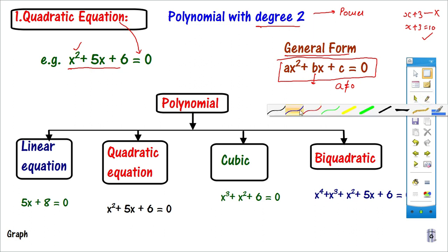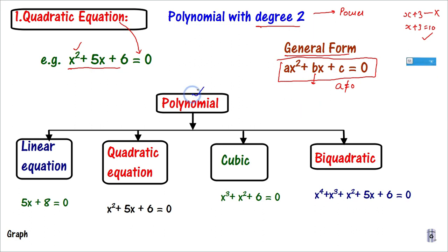Let me explain different types. In a polynomial, if the highest power is 1, that is called a linear equation. If we draw the graph of a linear equation, it will be a straight line. Our chapter is Quadratic Equation — if the highest power is 2, that is called a Quadratic Equation, with degree 2. The quadratic graph will be parabolic. I hope you remember the parabola — when we throw a stone, the path of the stone will be parabolic.